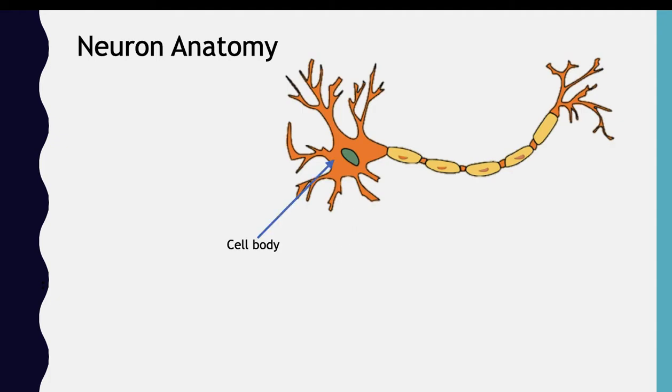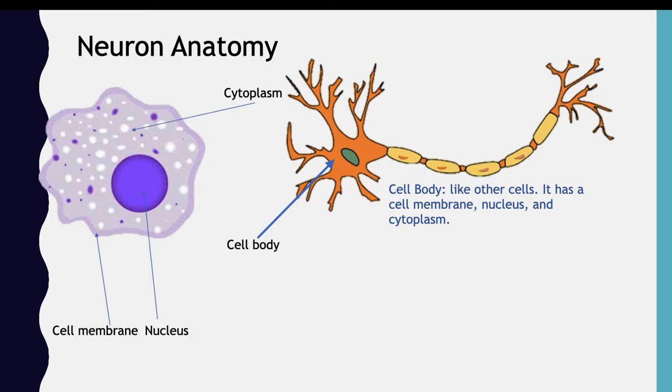The first part is the cell body, and the cell body makes the neuron a cell. It consists of a cell membrane, some cytoplasm, and a nucleus. The cytoplasm is the jelly-like substance that holds the stuff in the cell together, and the nucleus is like the control center of the cell.